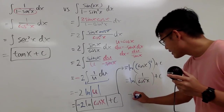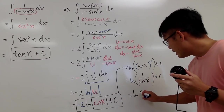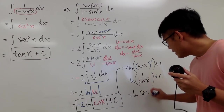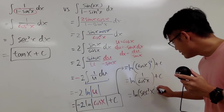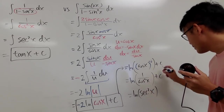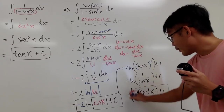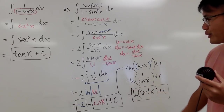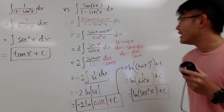And 1 over cosine squared x is secant squared x. So you can write this down as natural log of secant squared x in parentheses, with a plus C. So that's just another form of the same answer.